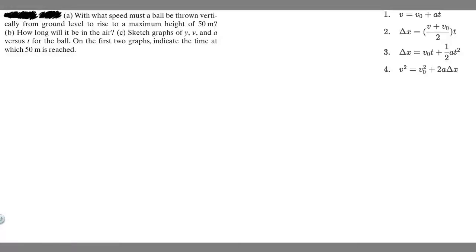In this problem, we're told with what speed must a ball be thrown vertically from ground level to rise to a maximum height of 50 meters. B, how long will it be in the air? And then C tells us to sketch the graphs, but we're just going to focus on A and B.